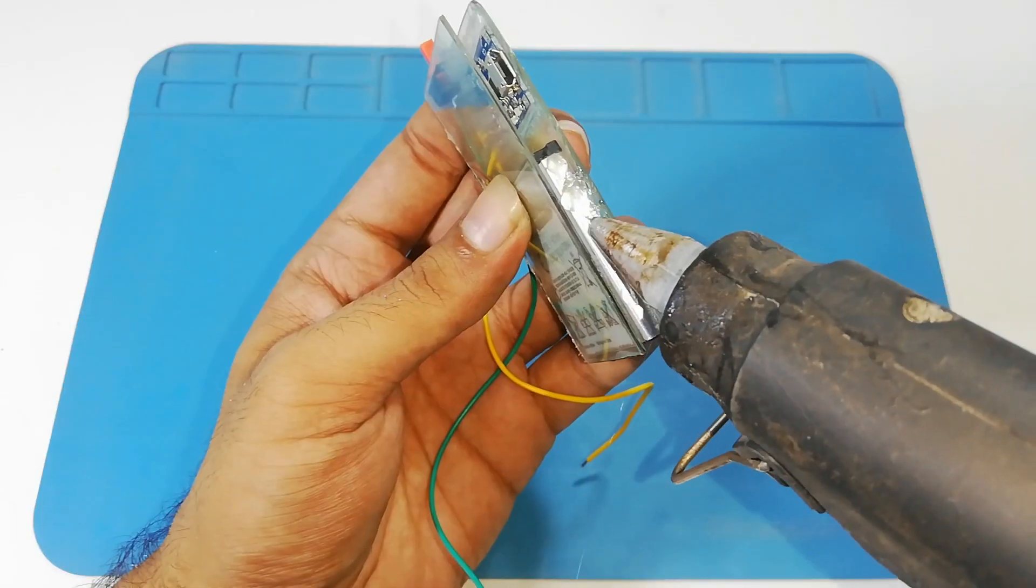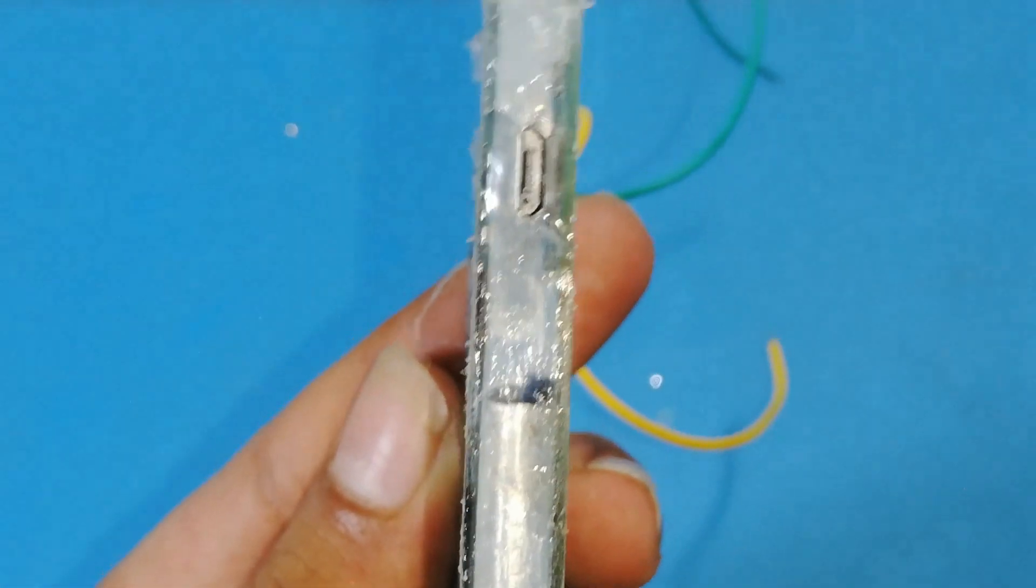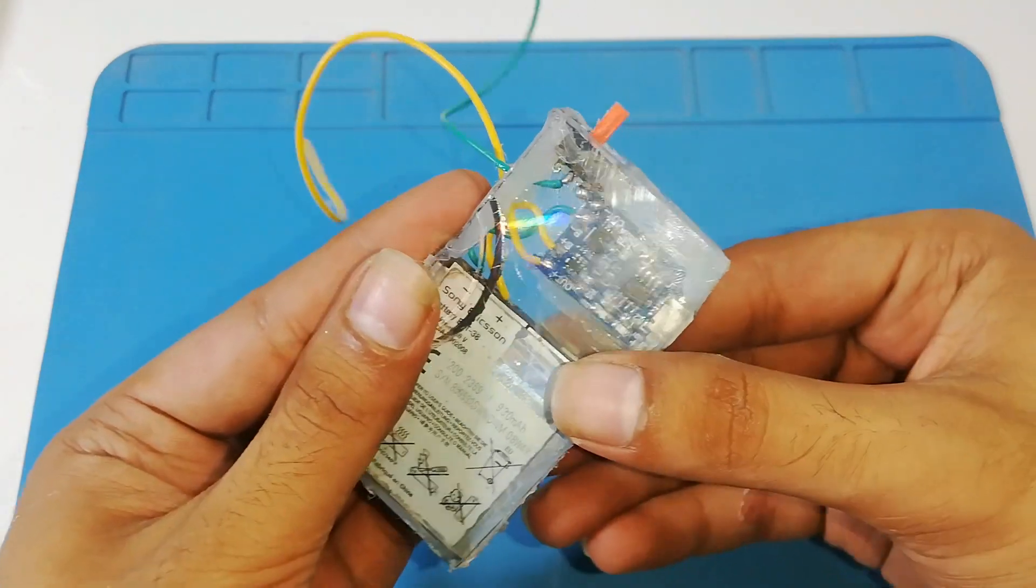Now with the help of some hot glue, secure all the side openings to make it watertight.